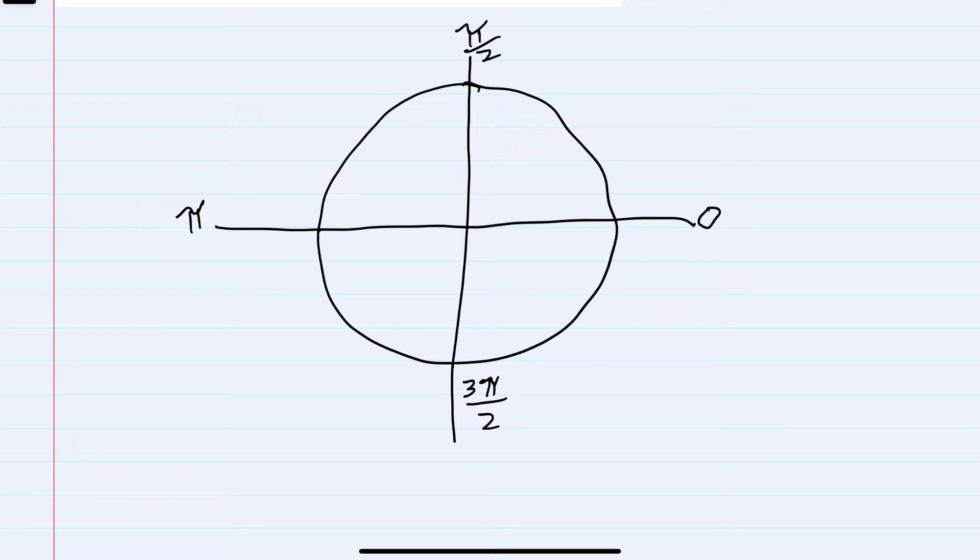For these, the coordinates are easy enough to remember. The first here for zero radians is the point (1,0). At the top here π/2, this is (0,1).